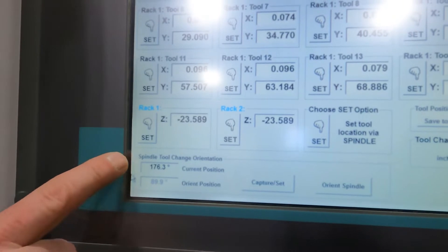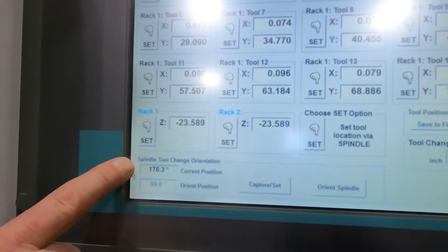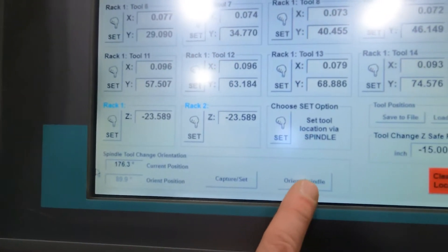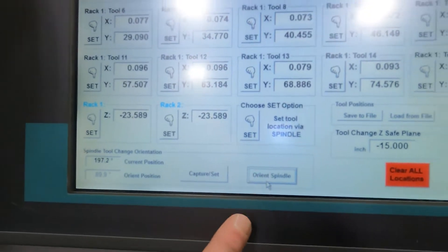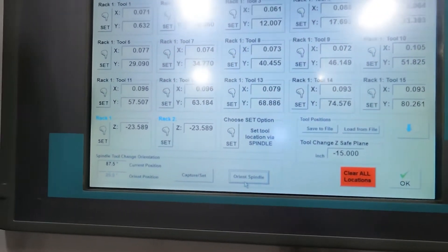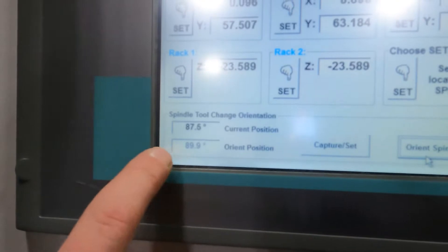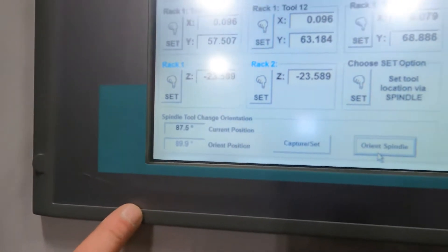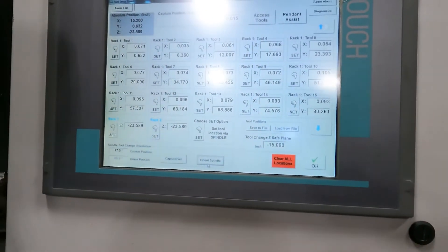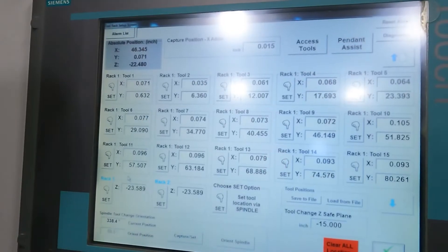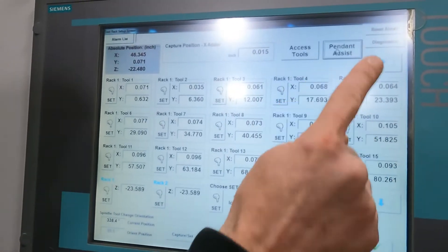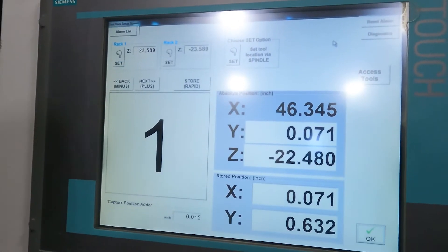We want to make the current position match. So we'll just go over here, hit Orientate Spindle. It will rotate that spindle where it will get close to that orientation position there. I'm just going to switch over and go to Pendant Assist, which enlarges everything.